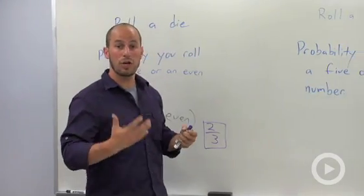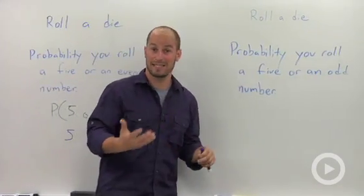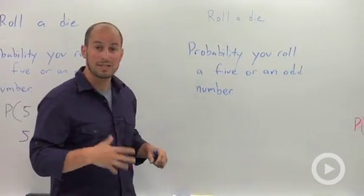So that's dealing with no overlap. There's no way to have a five that is even. The other situation is to have overlap.